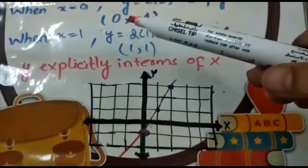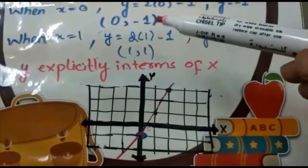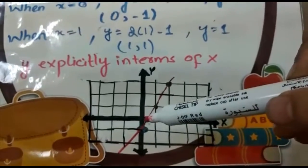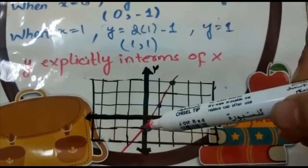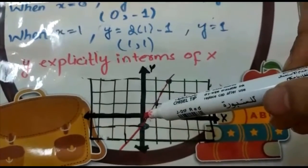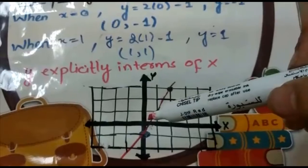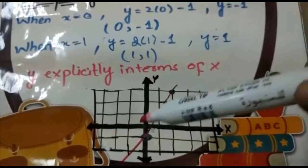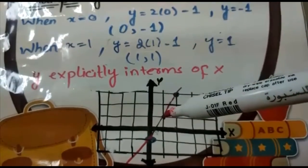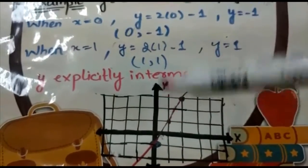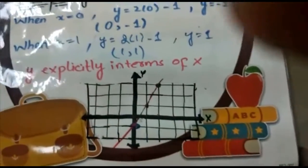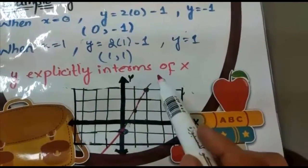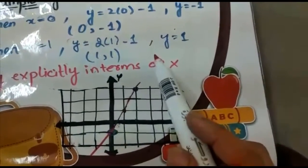At x = 0, y = -1, so we move one box down from the origin. For the second value, x = 1 and y = 1, so we move one box right and one box up. Now join these two points and extend the line — you get a straight line.